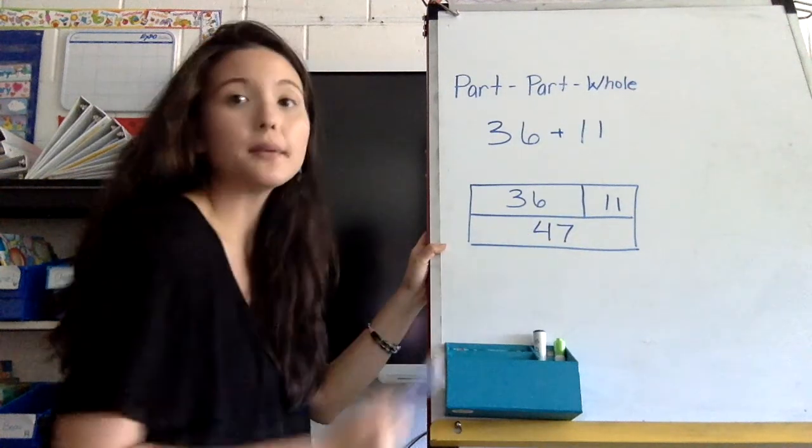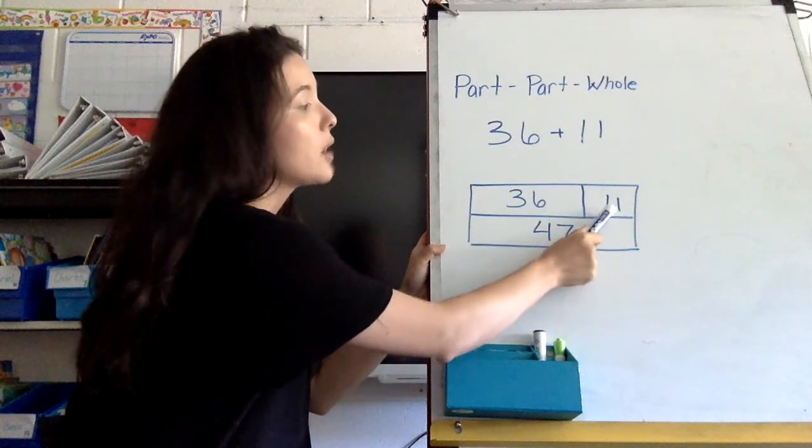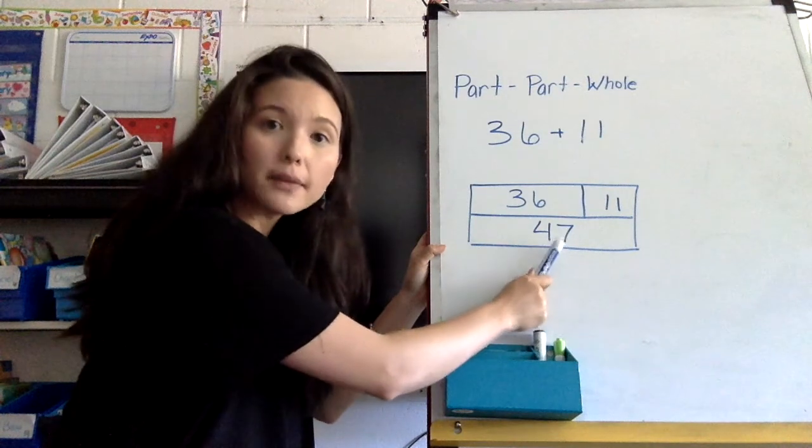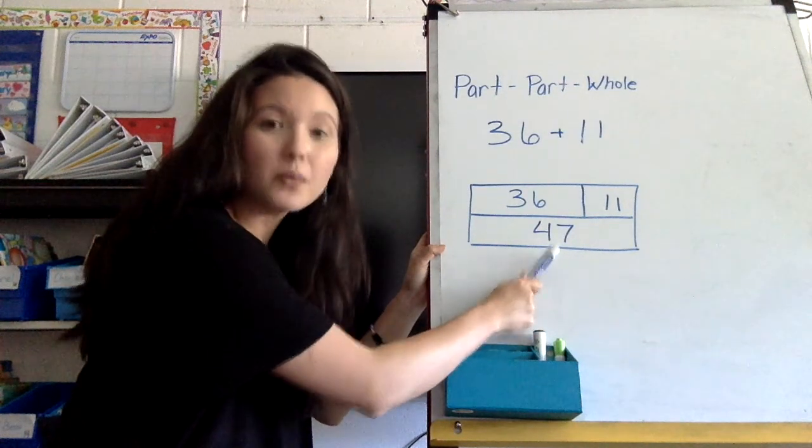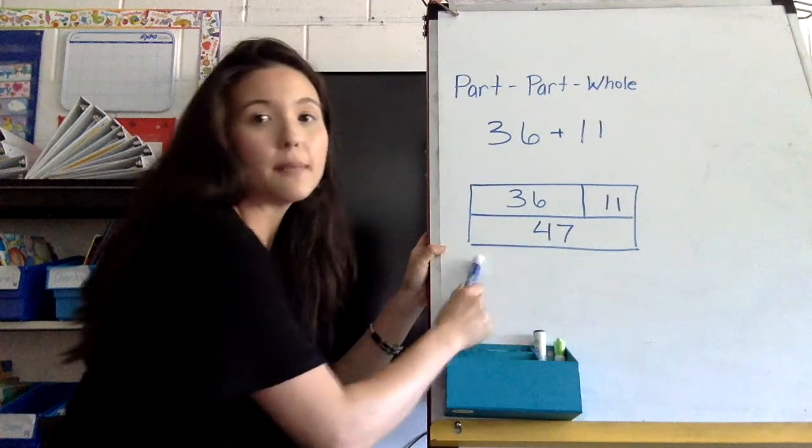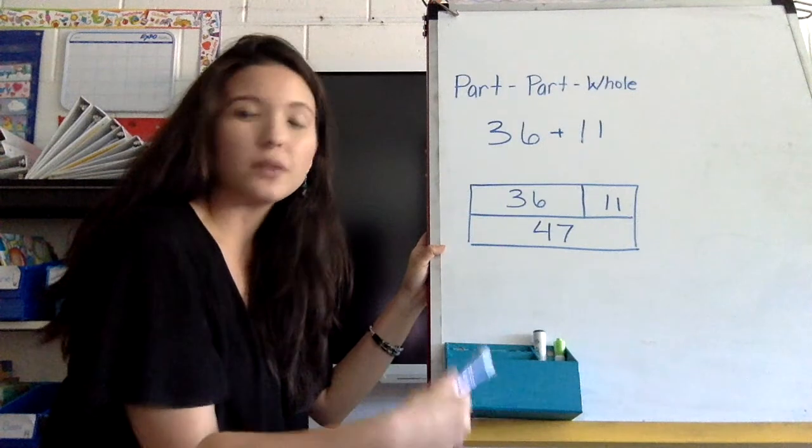The reason why we're studying this is so that you understand that 36 and 11 are both parts of a whole number. This will be very important for you to really understand when we get into subtraction, because we're going to be looking at this type of part-part-whole diagram when we move on to subtraction with regrouping or subtraction in general.